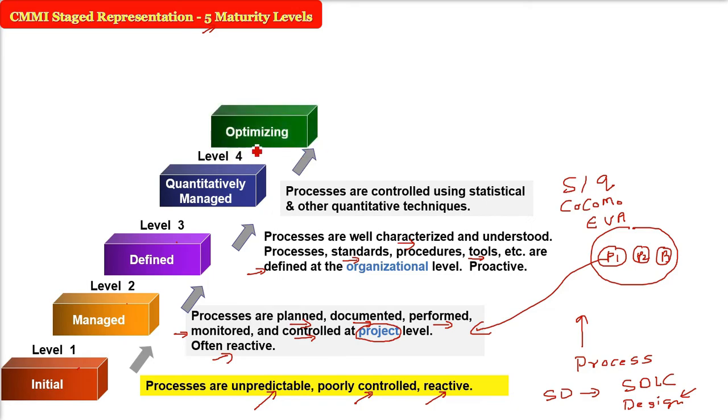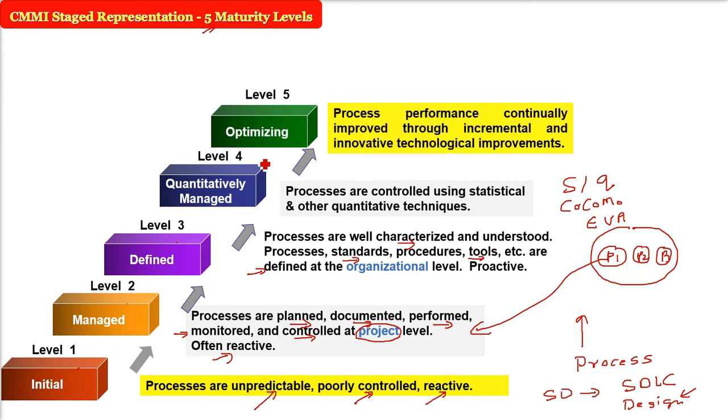Level five is optimizing, the highest level. If your organization is optimized, it means along with all levels one through four, the processes are continuously improving. Process performance continuously improves through incremental and innovative technological improvements. This is the process maturity diagram.